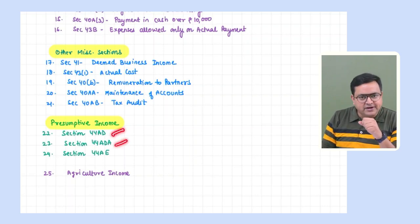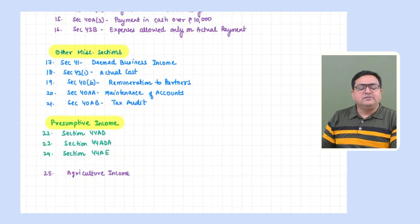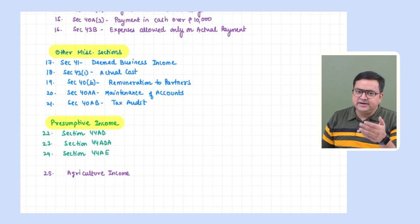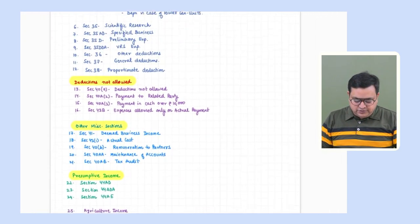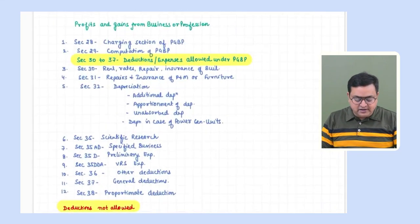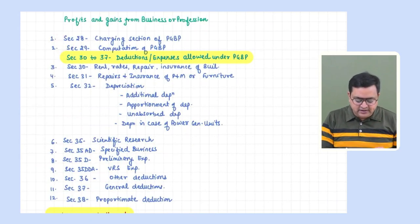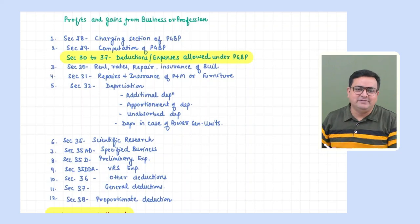We have three sections related to presumptive income in CA Inter: 44AD, 44AE, and 44ADA. We will also discuss agriculture income here in PGBP, although in your institute study material it is given in Chapter 1 under basic concepts. So the overview is: charging section, section 29, then deductions allowed, deductions not allowed, miscellaneous sections, presumptive income, and agriculture income.